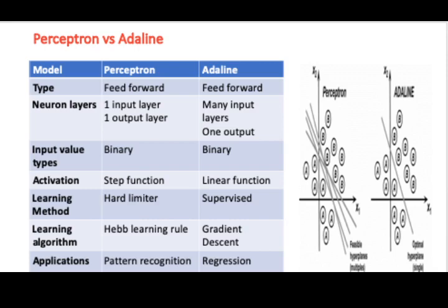When you talk of the layers of the neuron, a perceptron has one input layer and one output layer. Whereas an ADALINE differs from a perceptron in the sense that it has many input layers, but resembles a perceptron in the way it produces the output where there is only one output layer. When you talk of the activation function applied, a perceptron uses what is called a step function, whereas an ADALINE uses a linear function.